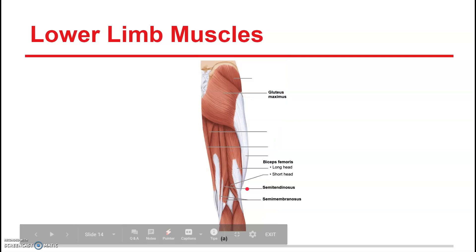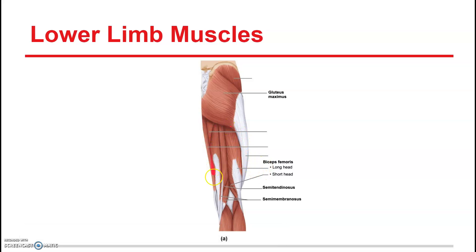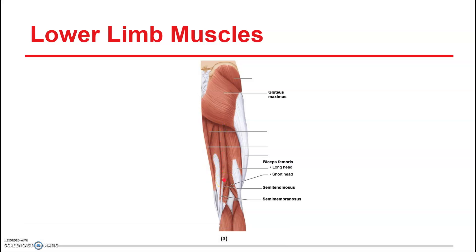Now the posterior muscles. We have the gluteus maximus and the hamstrings, which is another group. This big muscle is the biceps femoris. Then we have the semitendinosus right here, and the semimembranosus, which is partially under the semitendinosus and a little bit more medial — this area here is also part of the semimembranosus.